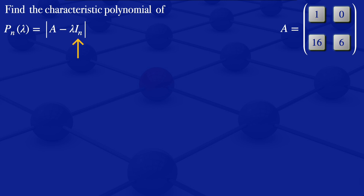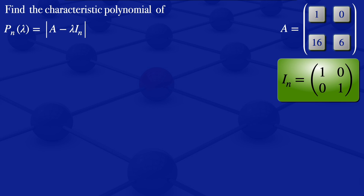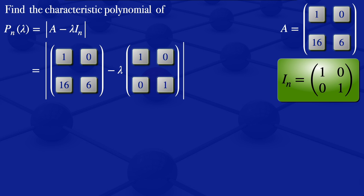The I_N here is an identity matrix which has the same size as the given matrix. In this case, our A is a 2 by 2, so we'll be using the 2 by 2 identity matrix, which has 1s on the diagonal. We substitute A and the identity matrix into this formula to get the determinant of A minus lambda multiplied by the identity matrix.